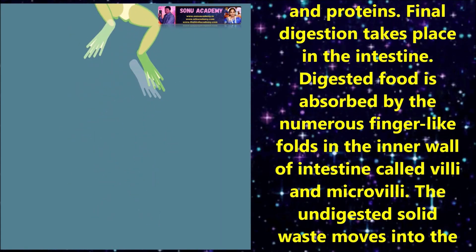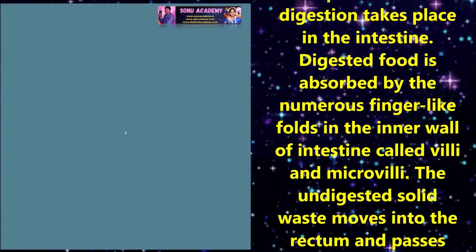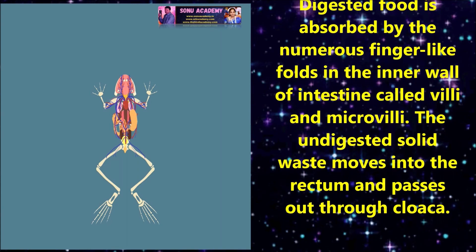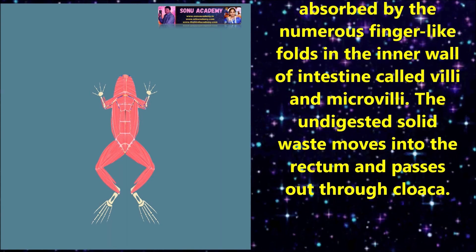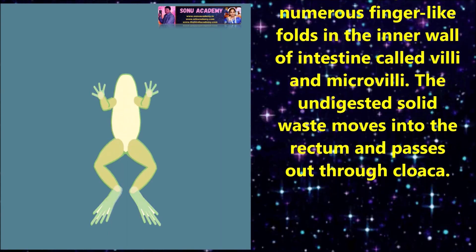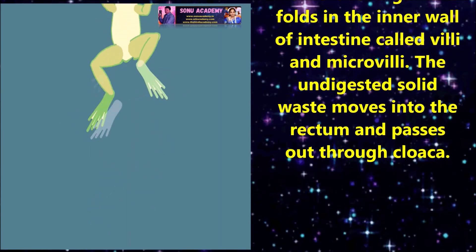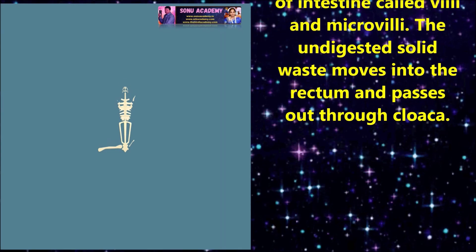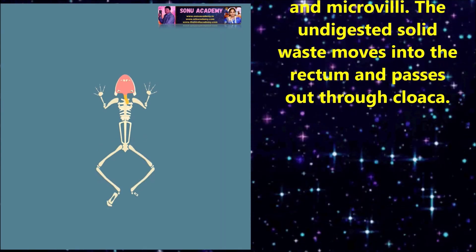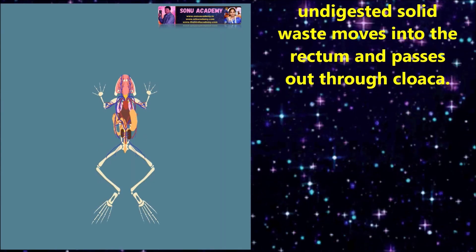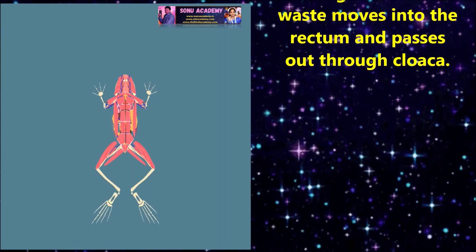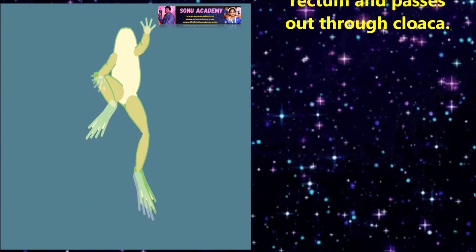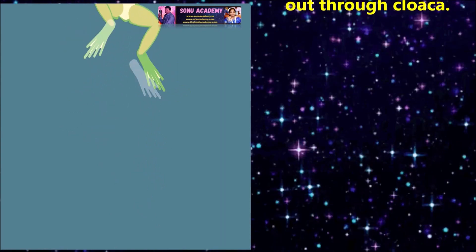Finally, digestion is completed in the intestine. Digested food is absorbed by the numerous finger-like projections in the inner wall of the intestine called villi and microvilli. The undigested solid waste is moved to the rectum and passes out through the cloaca.